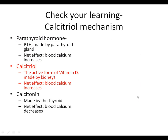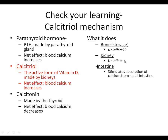Now for calcitriol: calcitriol has no direct effect on the kidneys — in fact, the kidneys produce calcitriol, so it's the opposite relationship. Calcitriol also has limited direct effect on bone, though there is some evidence that calcitriol influences the establishment of osteoclast and osteoblast populations early in life, making its bone effect indirect. What calcitriol does directly is stimulate absorption of calcium from the small intestine.